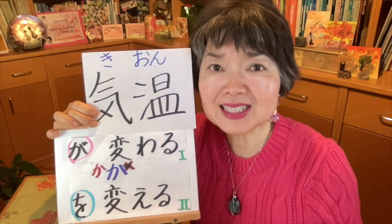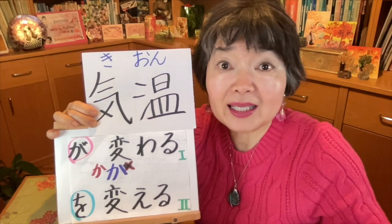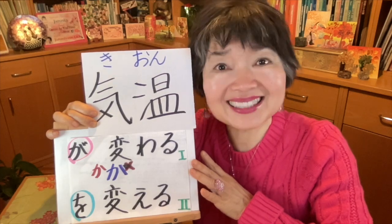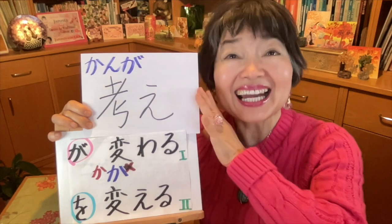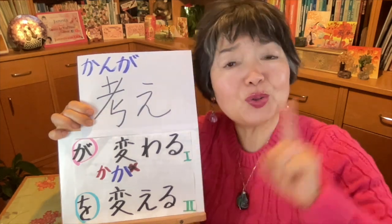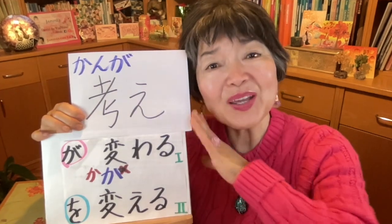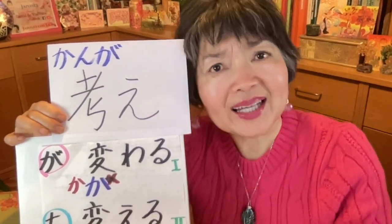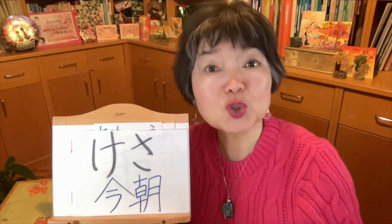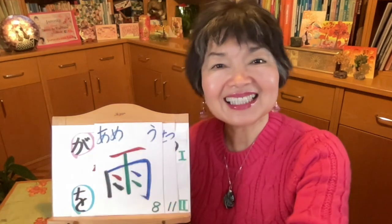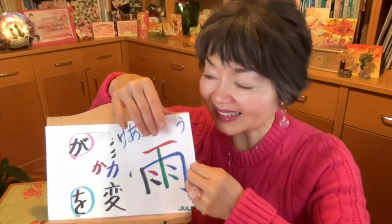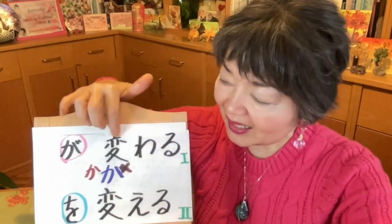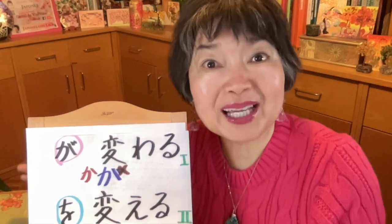The temperature has changed — maybe it was hot, but today it is cold: 気温が変わりました. My thought has changed: 考えが変わりました. Please don't change your thought: 考えを変えないでください / 考えを変えないでね. The rain turned into snow this morning: 今朝、雨が雪に変わりました.